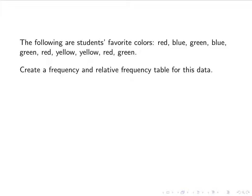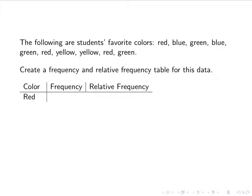Let's do one more. The following are students' favorite colors: red, blue, green, blue, green, red, yellow, yellow, red, green. I'm going to create a frequency and relative frequency table for this data. Your numbers don't have to be quantitative — you can have qualitative data, you can have categories. The only thing we don't do with categorical data is cumulative frequency, which doesn't make much sense. So we just do frequency and relative frequency. The number of people that chose red is 3, and if we add up all colors chosen, we get 10. So 3 divided by 10 is 0.30 — the relative frequency for red is 0.30.